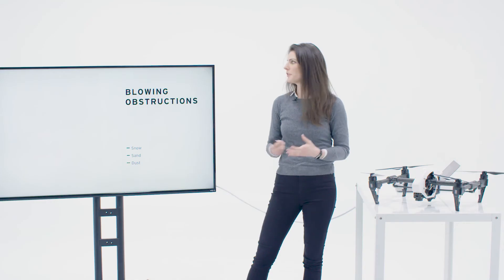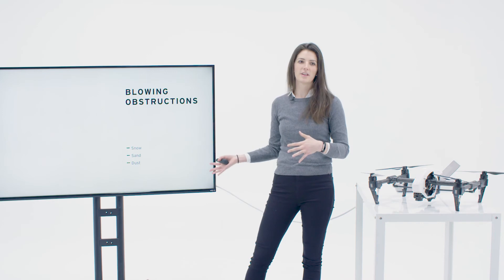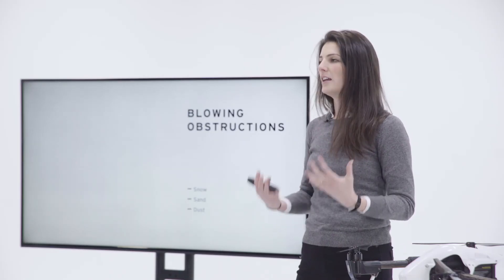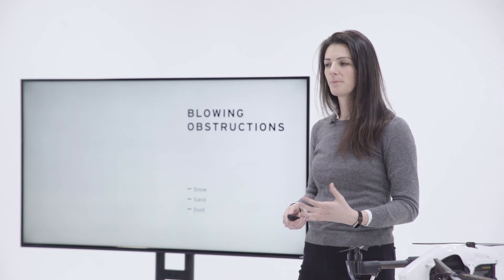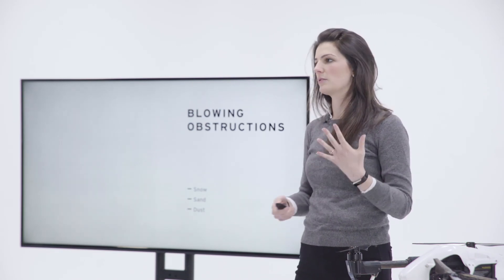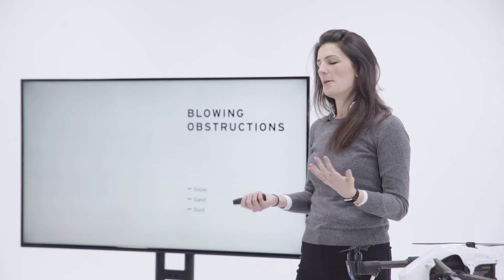You also want to be aware of other blowing obstructions like sand or dust. Those situations can be really tough on the propellers, and if any of that gets into the motors — if they're not totally sealed — you can run into issues where the bearings aren't able to move as freely, the motors aren't able to spin as effectively, they can generate a lot of heat and end up doing a lot of damage to your aircraft. So you want to be really cautious if there are blowing obstructions like sand, dust, or snow.